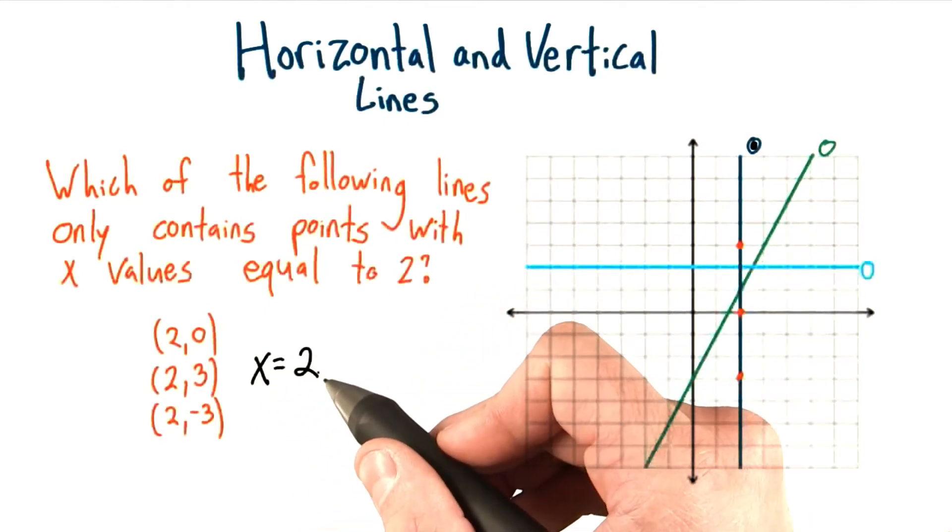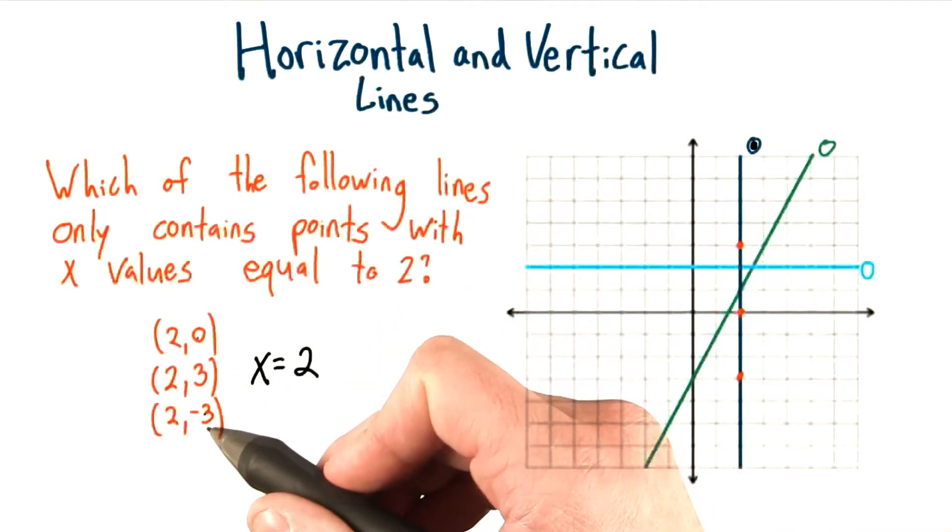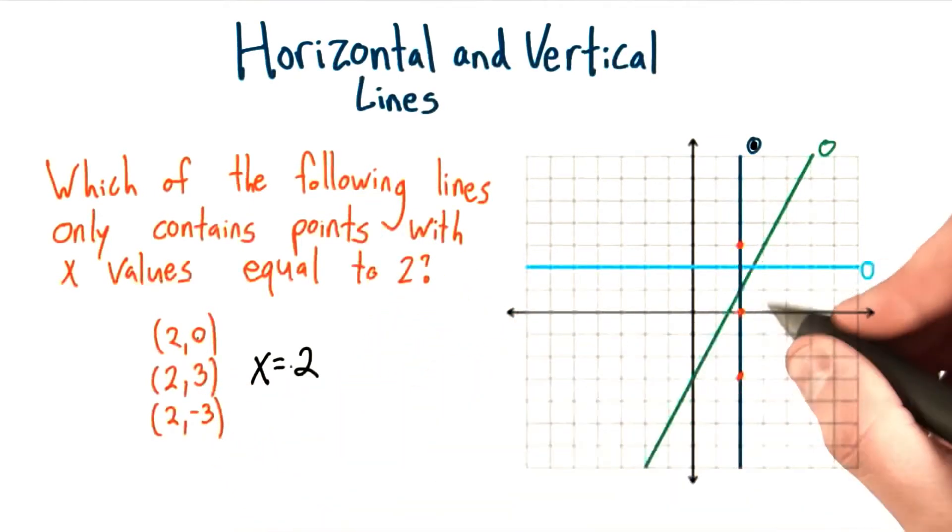Notice this equation doesn't say anything about y, because y can be anything. It can be 0, 3, negative 3, or a billion, or anything else. All it says is x equals 2, and that describes this vertical line.